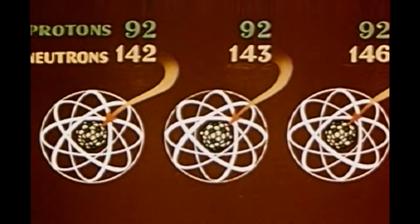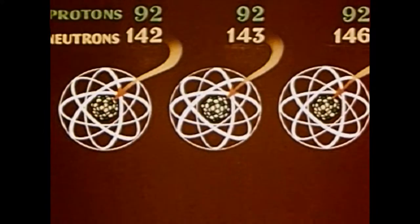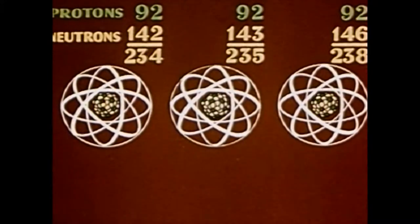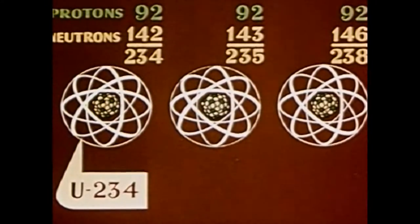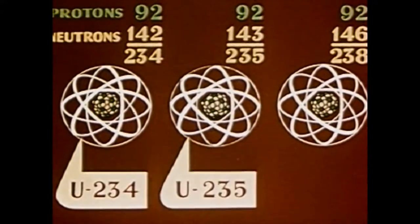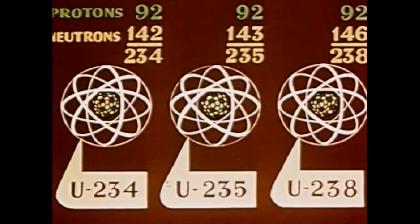That means uranium has three natural isotopes: U234, U235, and U238.